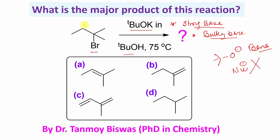So what will it do? It will remove a beta hydrogen. If you look, there are two types of beta hydrogen available. This is one beta hydrogen and this is another beta hydrogen. So two types of beta hydrogen are available here.